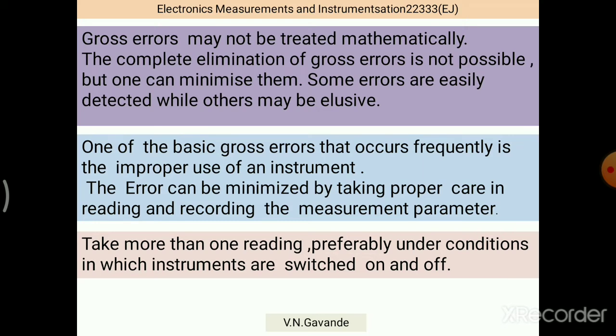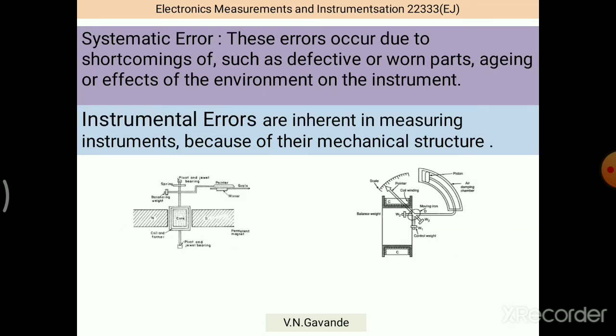Improper use of an instrument means changes in the scale settings of the instrument. There may be error, for instance, measuring voltage using an ammeter instead of a voltmeter. This is a basic gross error. The error can be minimized by taking proper care in reading and recording the measurement parameter. Take more than one reading, preferably under different conditions in which the instruments are switched on and off.